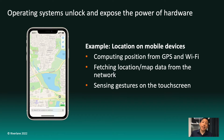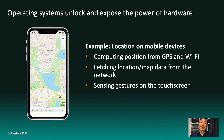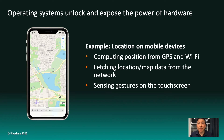I want to start by setting some context about what an operating system does with a familiar device that we use every day — a mobile phone. I'm sure that you, like myself, have probably made extensive use of apps that rely on your current location, things like Uber or Maps. What you might not be aware of is the tremendous amount of work the operating system is doing behind the scenes to make these apps possible.